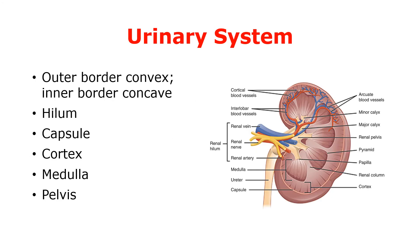This is a microscopic diagram of the kidney. In this diagram we can see that the kidney has two borders: the outer border and the inner border. The outer border is convex in shape whereas the inner border is concave in shape. The inner border is also called the hilum, through which blood vessels and renal nerves enter and exit from the kidney.